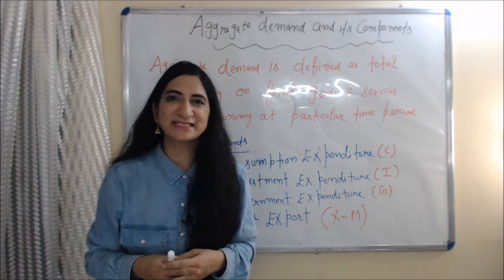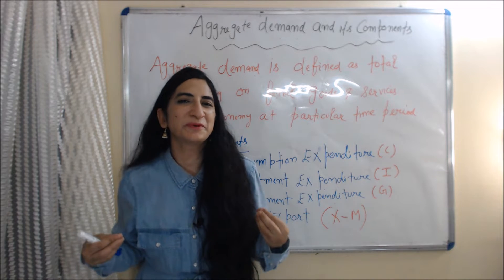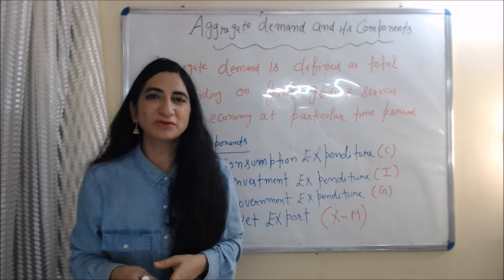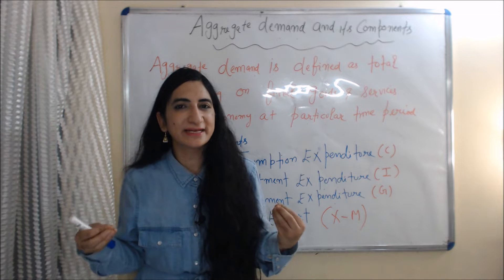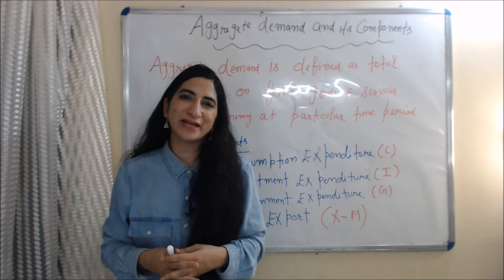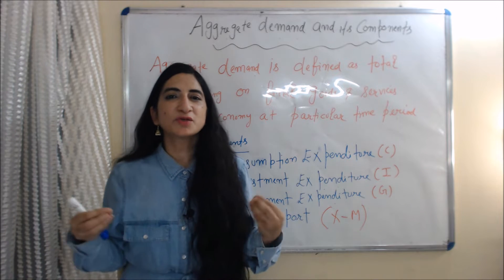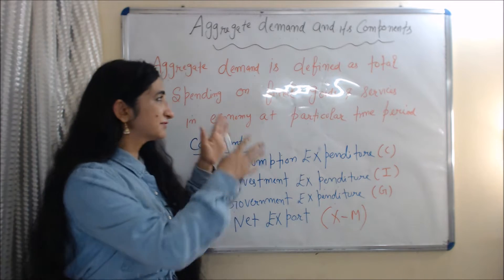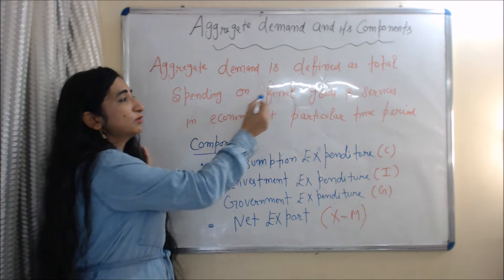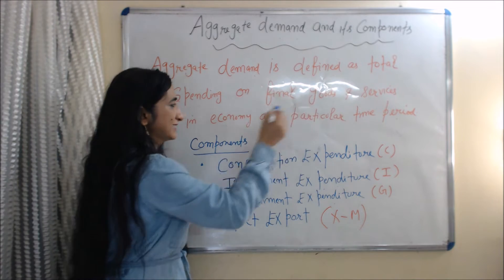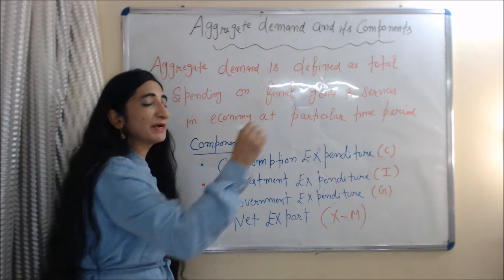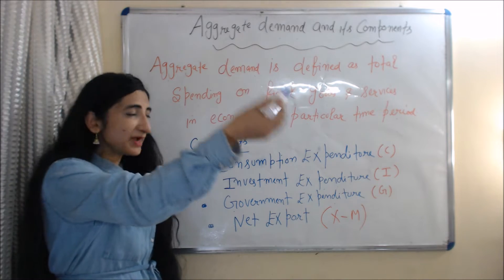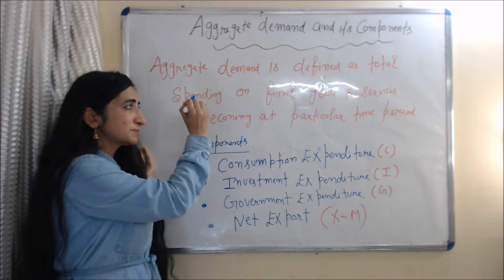Hello everyone, my name is Mini Sethi. I hope you all are staying healthy. Today we are going to talk about aggregate demand and its components. Aggregate demand is defined as total spending on final goods and services in the economy at a particular time period.